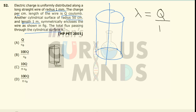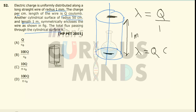The total charge enclosed in this cylindrical surface will be the charge enclosed between this length. The length of the cylinder is equal to 1 meter. The charge per unit centimeter is given, so lambda is equal to q coulombs per centimeter. Converting to per meter, it will be equal to q × 100 coulombs per meter.